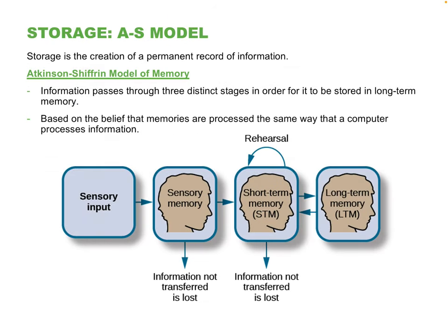Here's a very well-known model to help make sense of our memory — the Atkinson-Shiffrin model, also called the three-stage model. Everything we remember we first have to notice with our senses. If you don't see it, hear it, or touch it, you're not going to remember that stimulus. The first stage is called sensory memory.